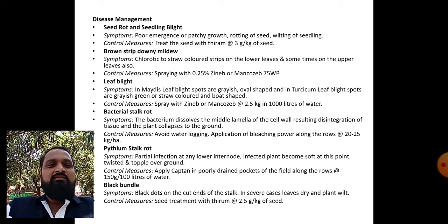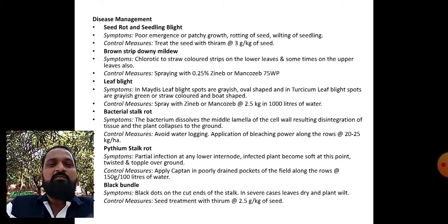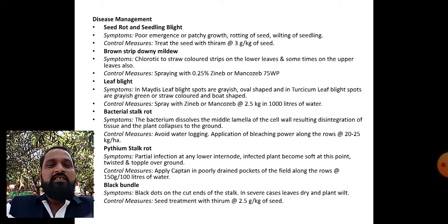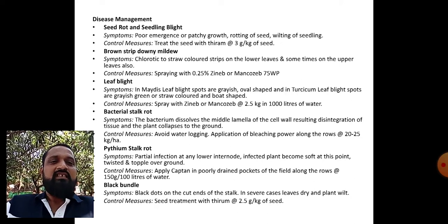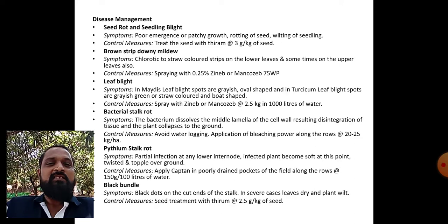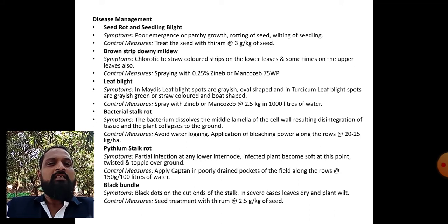Bacterial stalk rot: symptoms - bacterium dissolves the middle lamella of the cell wall, resulting in disintegration of tissues and the plant collapses to the ground. Control measure: avoid water-logging; apply bleaching powder along the rows at 20 to 25 kg per hectare. Pythium stalk rot: symptoms - partial rotting at any lower internode; infected plant becomes soft at this point, twisted, and topples over to the ground.